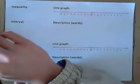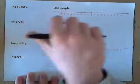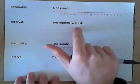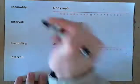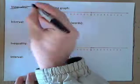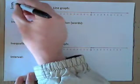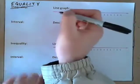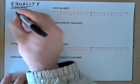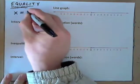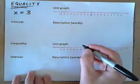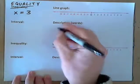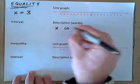Now, we also need to learn different ways to represent inequalities. We can represent them as a line graph, an interval, or in words. Let's start, not with an inequality, but with an equality. So, something like this: x is equal to 3. How would we write this in words? x is 3.